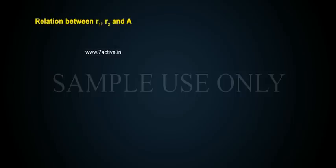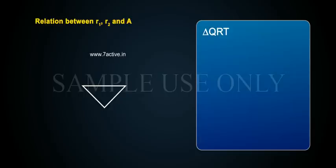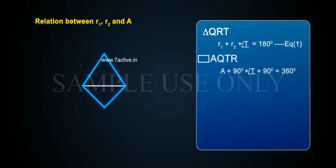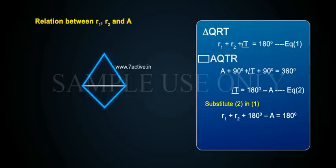Relation between R1, R2, and A. In the triangle QRT, R1 + R2 + angle T = 180 degrees — Equation 1. In the quadrilateral AQTR, A + 90° + angle T + 90° = 360°, so angle T = 180° − A — Equation 2. Substituting Equation 2 into Equation 1: R1 + R2 + 180° − A = 180°, therefore R1 + R2 = A — Equation 3.